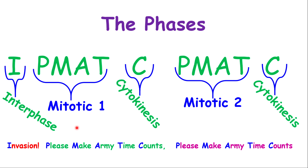Don't get frustrated with these long names. There are two sets of divisions in meiosis, and we refer to those as mitotic divisions — meaning the nucleus of the cells are dividing. There is one interphase, followed by the first PMAT, which is mitotic division one, and then cytokinesis. After that, you go to the second PMAT, which is the second mitotic division, followed by another cytokinesis. A helpful mnemonic to remember is: 'Please make army time counts' — said twice, because there are two sets of divisions.